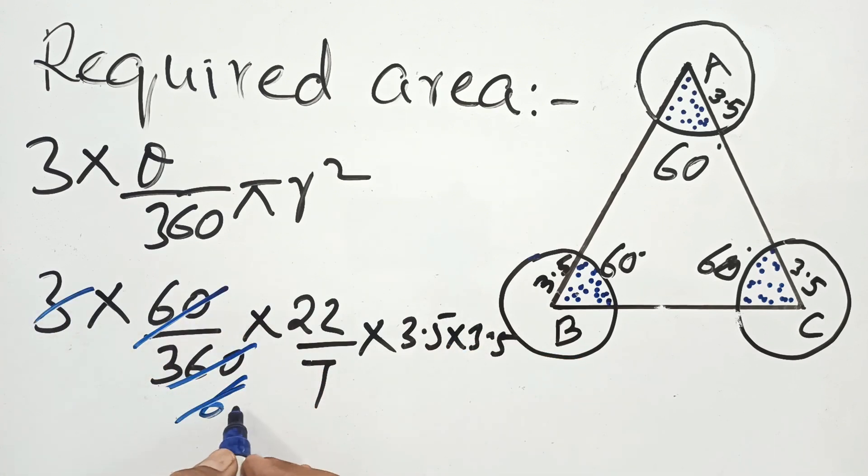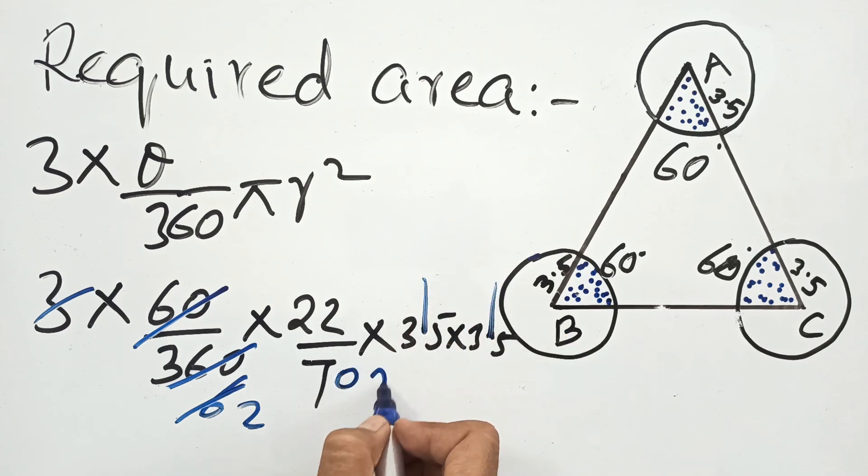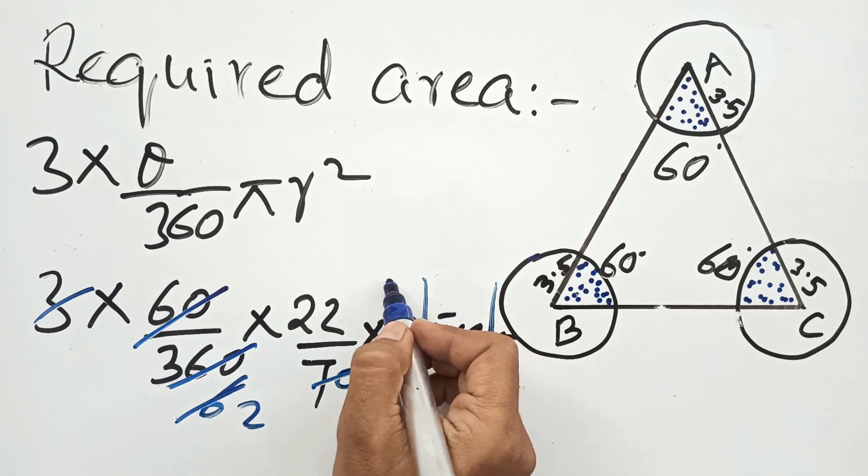6 and this 3 to the 6 and we can remove this decimal, so zeros will come 75 to 35.